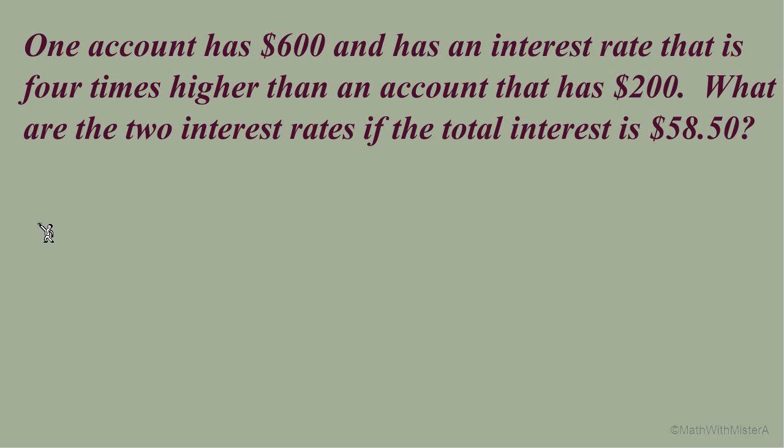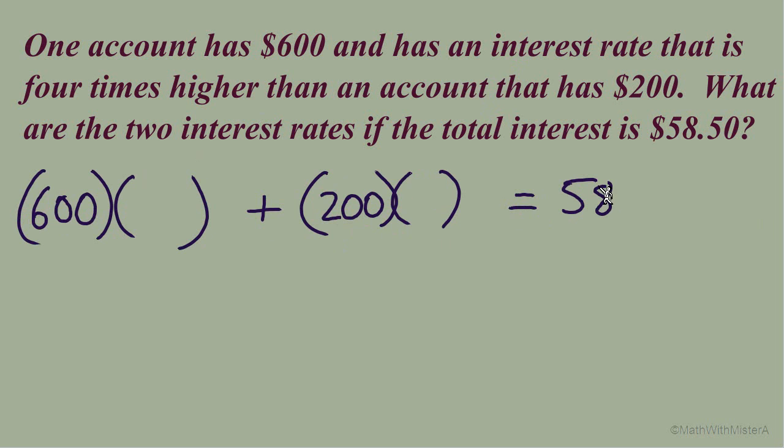What's our first account, the principal and the interest rate? We actually don't have either rate in this problem. We know the first account, $600. We don't know the rate yet. Our second account has $200. We don't know that rate yet either. We know the total interest, $58.50. We do have information about the interest rates. The rate for the $600 account is 4 times higher than the account that has $200. So the rate for the account that has $200 in it, that's the quantity that we see at the end of this sentence. I'll choose to make it equal x, so that when we see the first interest rate is 4 times higher than x, 4x.